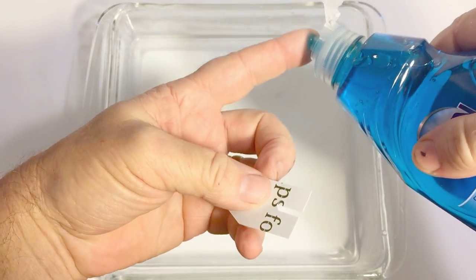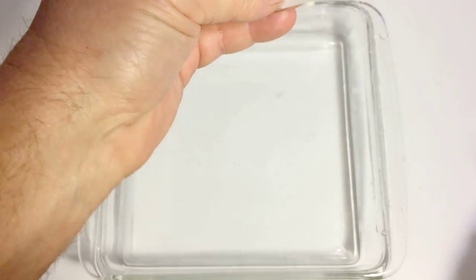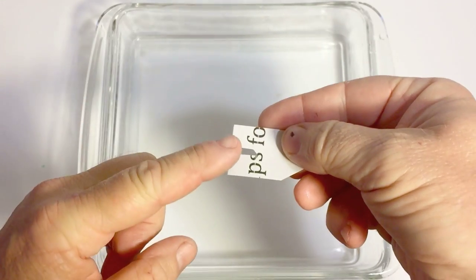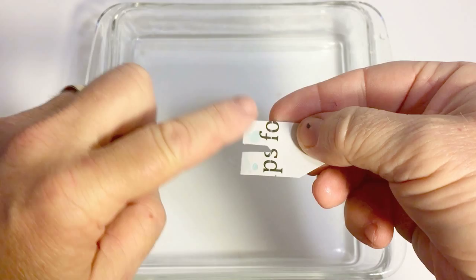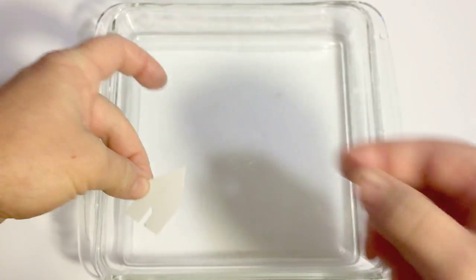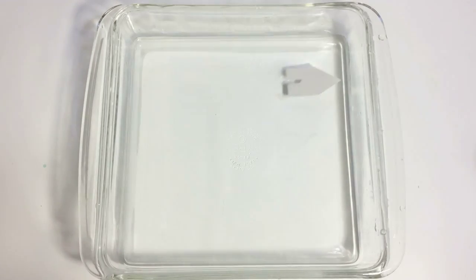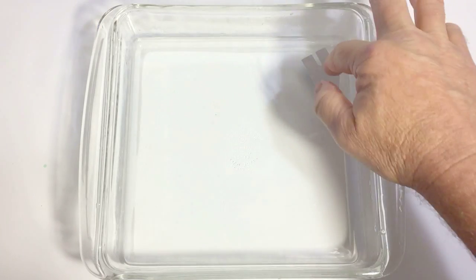Every time you want to repeat this experiment, you need to replace the water as the surface tension is already broken down. You can try different things like a small boat or a big boat, or do like I'm doing here and just put the soap on the back part of the boat to see what happens.